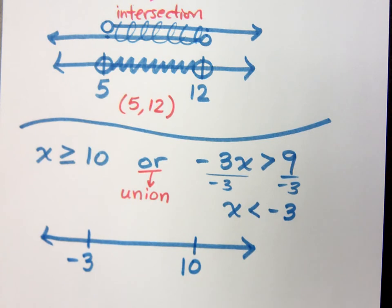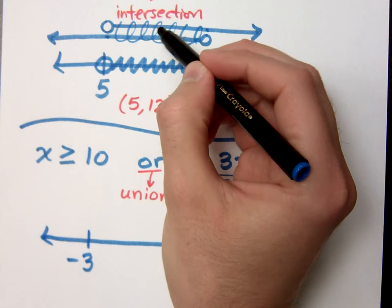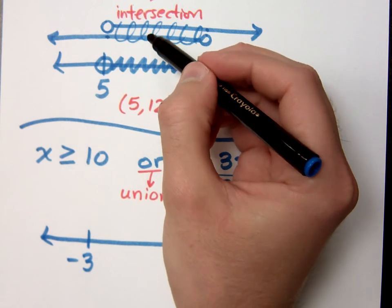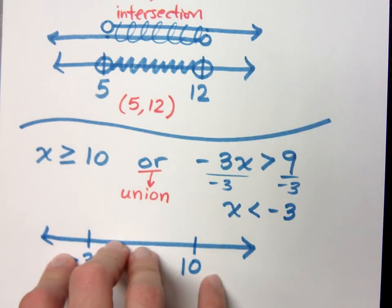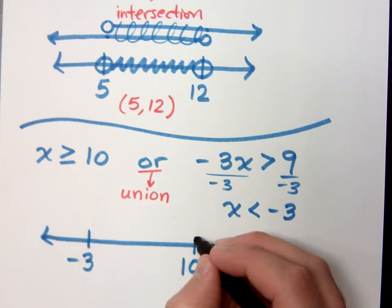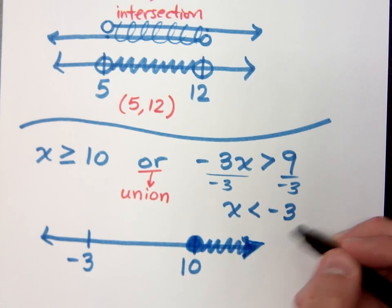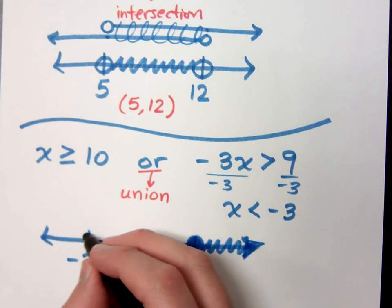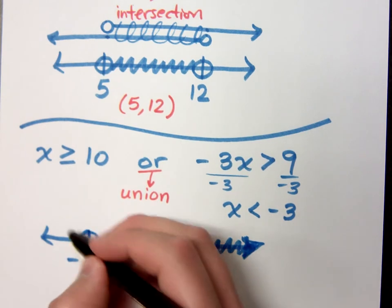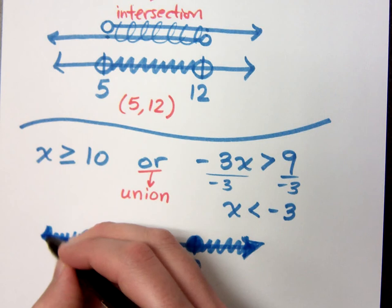Now, since the union says put everything together, I don't have to have two separate graphs like I have up here, where I was finding where do they intersect. I'm just going to put everything on here and see what I have. Greater than or equal to 10 means I have a closed circle at 10, and greater than is out to the right. Less than negative 3 means an open circle at negative 3, and going out to the left.